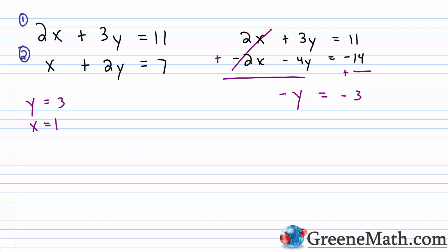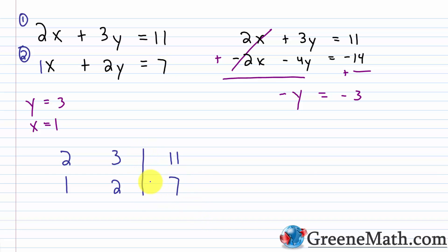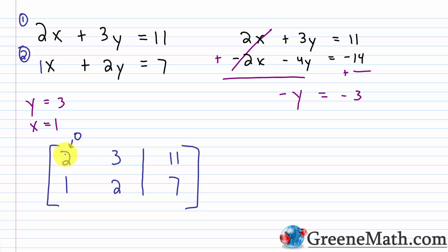For the augmented matrix of 2x plus 3y equals 11 and x plus 2y equals 7, we write the coefficients and constants in order. The goal is to get a 0 in the x position of the second row — eliminating x — just as we did in elimination. Using row operations, I multiply row 2 by negative 2: 1 times negative 2 is negative 2, 2 times negative 2 is negative 4, and 7 times negative 2 is negative 14.